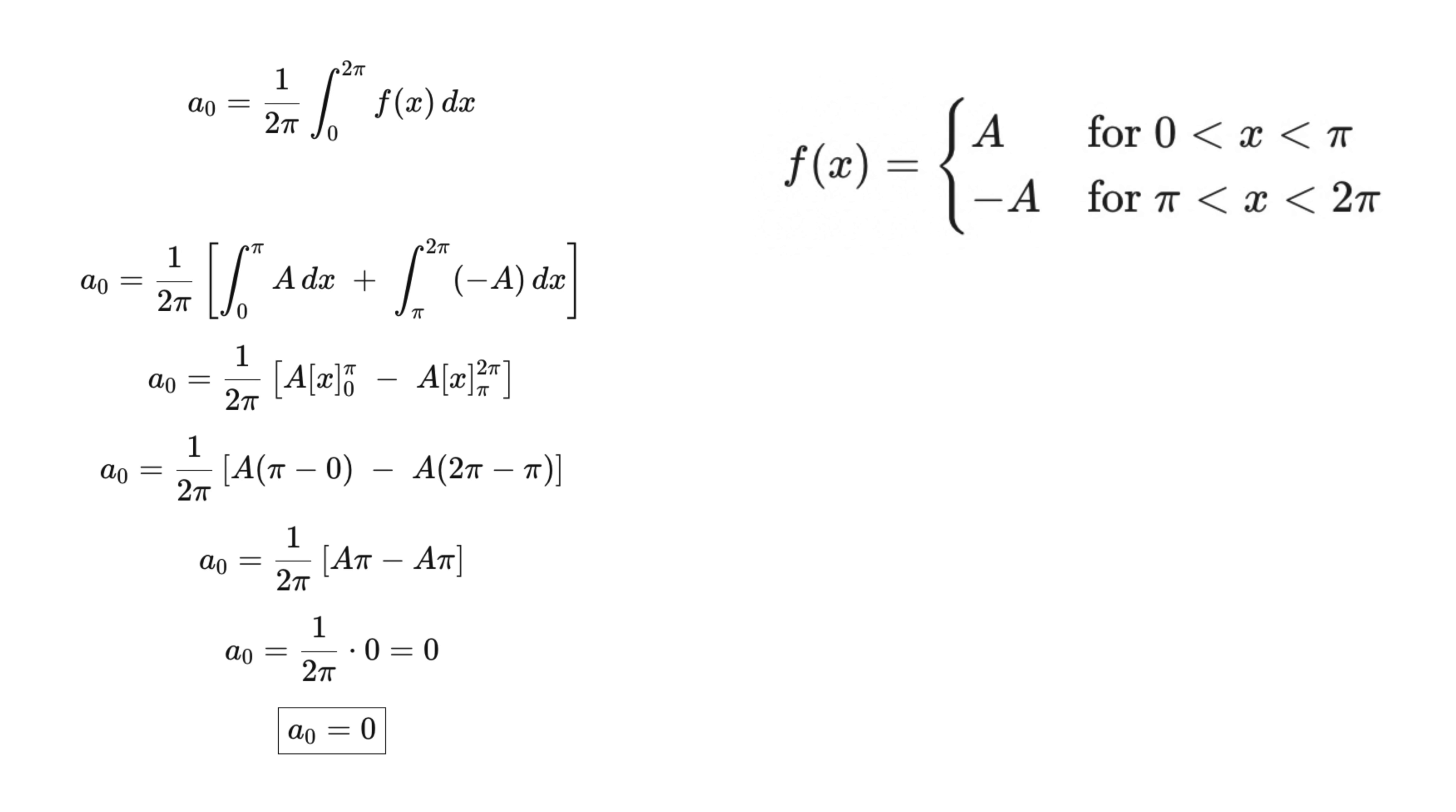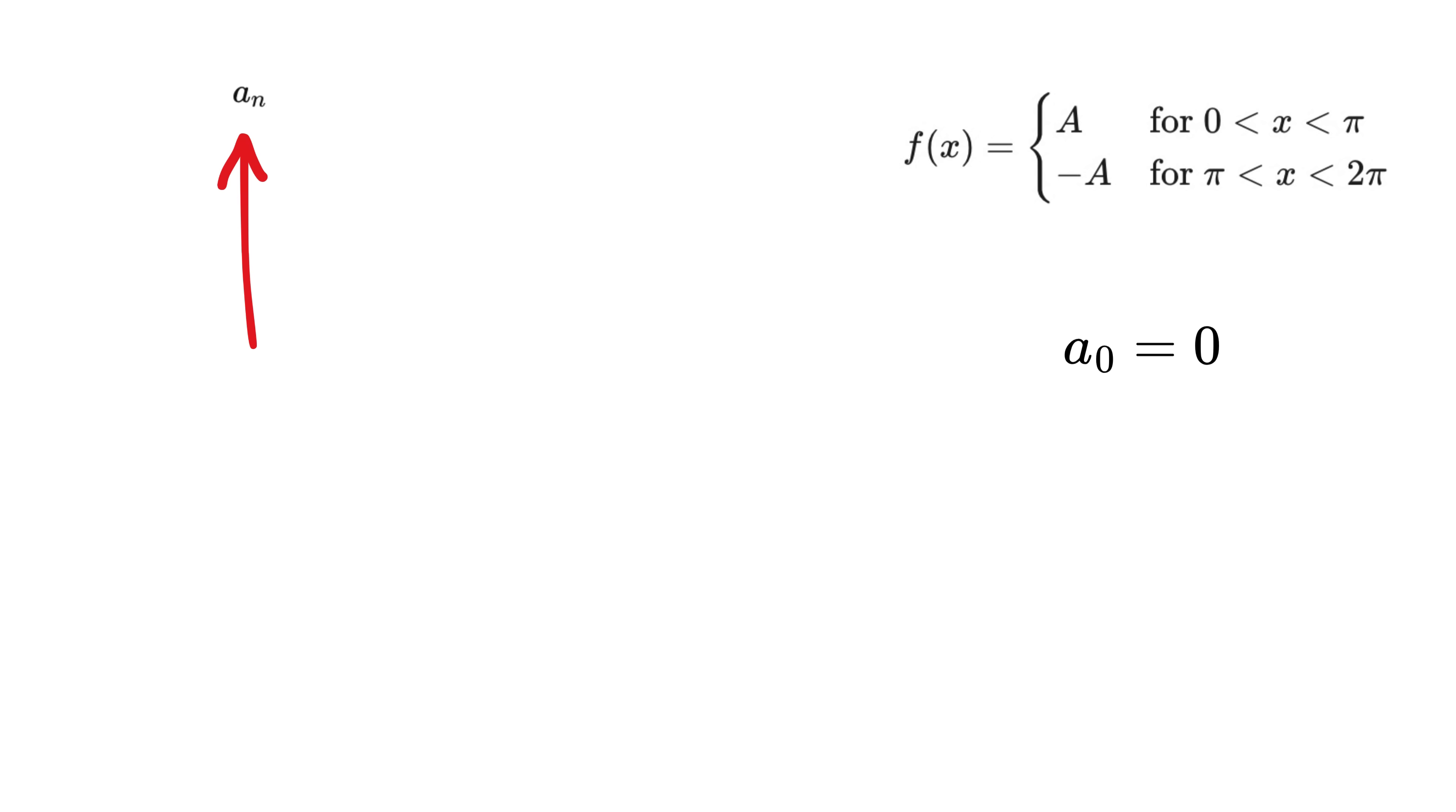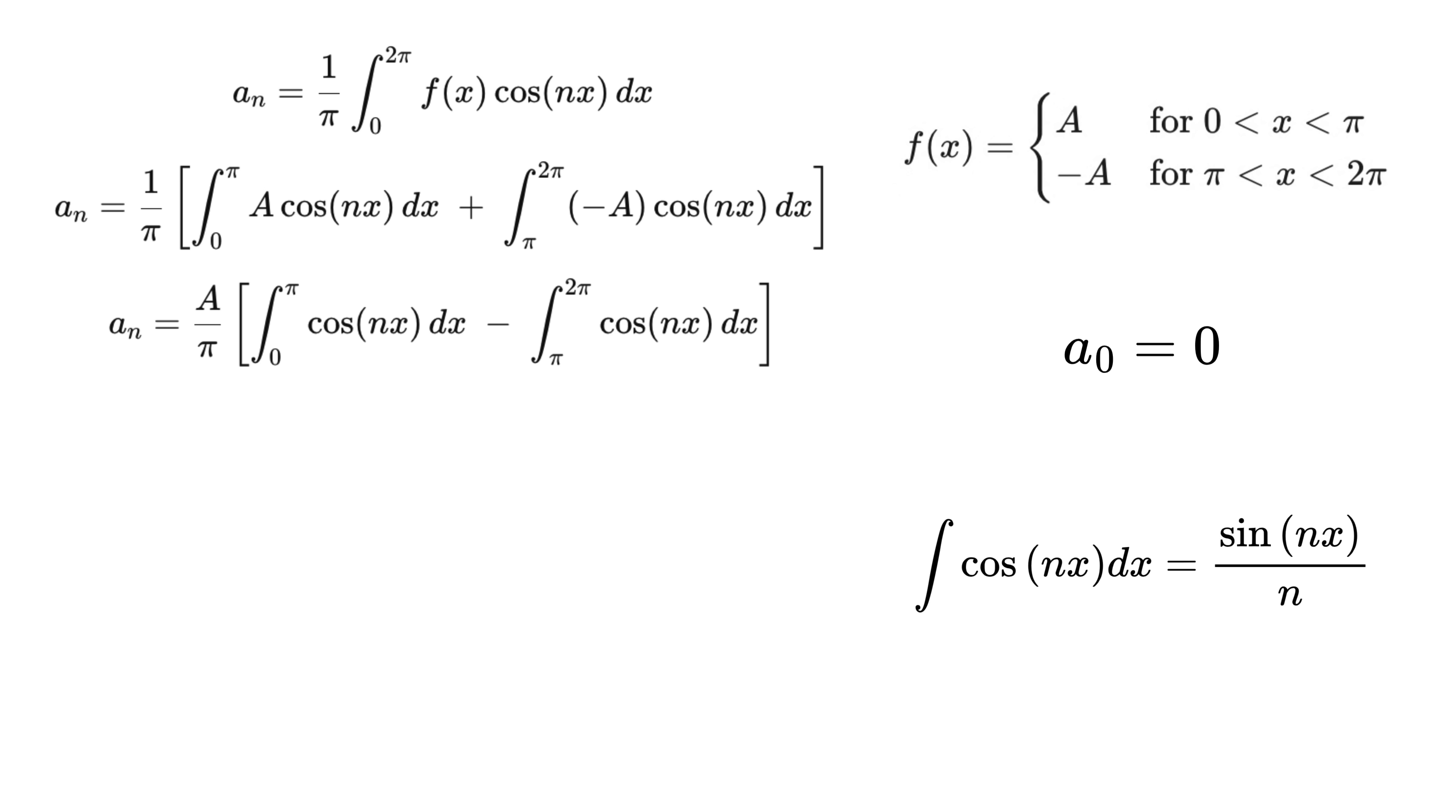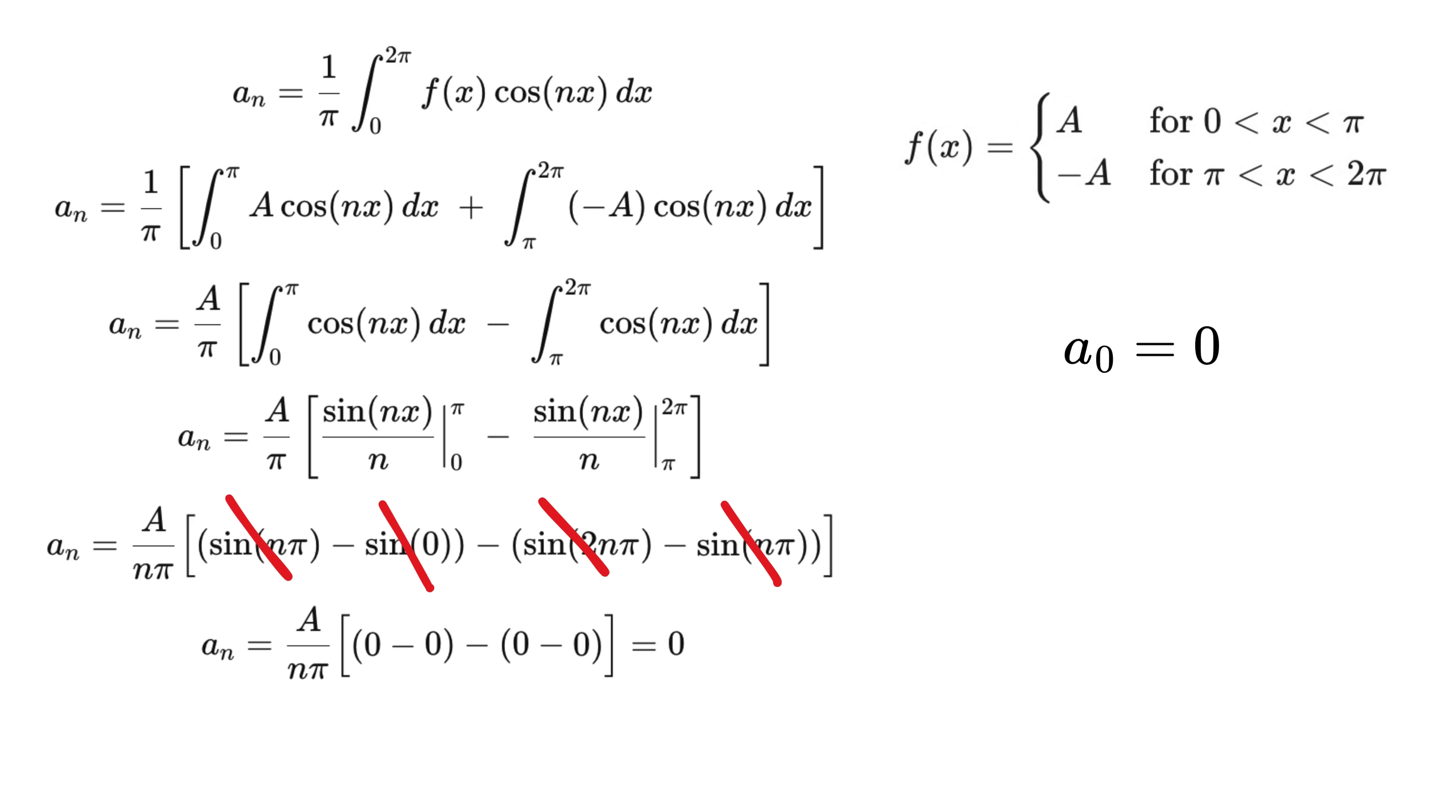This means A₀ is 0. Now we move on to the other coefficients, like aₙ for cosine waves, which is given using this integral, and it represents the average of the original signal f(x) times cos(nx) over one full period. We again split the integral into these two intervals. The first contribution is A times the integral of cos(nx), from 0 to π, and the second contribution is minus A times the integral of cos(nx), from π to 2π. The integral of cos(nx), with respect to x, is sin(nx) over n. So when we evaluate the first contribution, we get A times this, and when we evaluate the second contribution, we get minus A times this. Now substitute the boundary values. Sine of any integer times π is 0, and sine of 0 is 0, so each bracketed term becomes 0. Hence, aₙ equals 0 for every integer n.